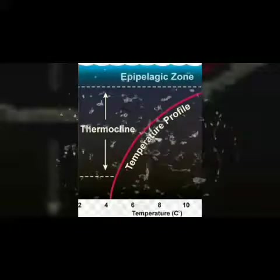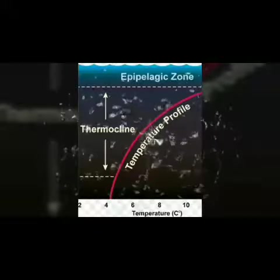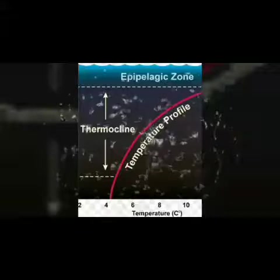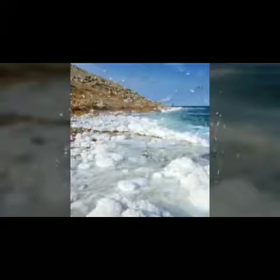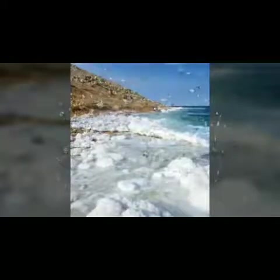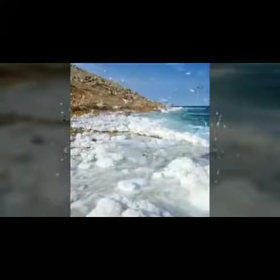Difference in temperature of the ocean waters: temperature differentiates between polar and tropical regions of the oceans, moving warm tropical waters towards the polar regions and cold polar waters to the tropical regions in the form of currents. Difference in salt concentration in ocean waters: there is a difference in concentration of salt in ocean waters in different oceanic parts. Consequently, water with high concentration of salt sinks and water with less concentration of salt rises.